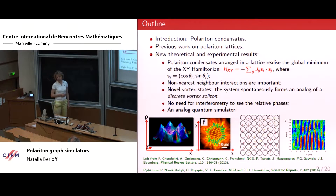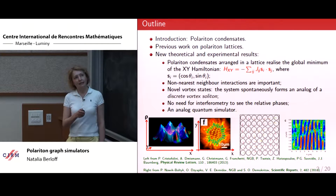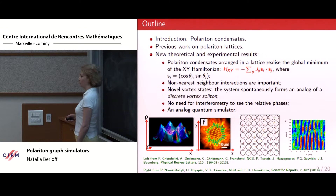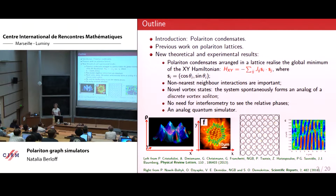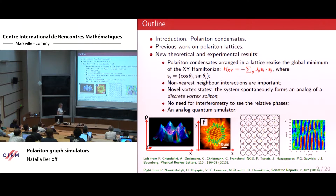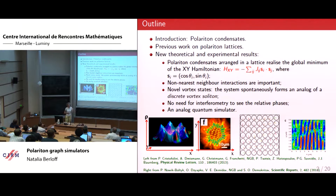The advantage of the system is in finding the global minimum rather than a local minimum. This is due to condensation itself — this condensate is, in its essence, a laser. As we know from the normal operation of lasers, they maximize the gain and therefore maximize the number of quasi-particles in the system. By its construction, by the process of condensation, the system condenses into the global minimum of this Hamiltonian.